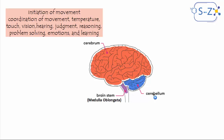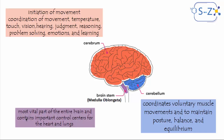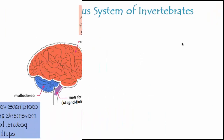The cerebrum is responsible for lots of voluntary actions mainly. The cerebellum is responsible for coordinating voluntary muscle movement to maintain posture, balance, and equilibrium. Finally, the brain stem is a very vital part — it contains the control centers for the heart and lungs, which carry on involuntary actions and reflex actions that keep us alive.